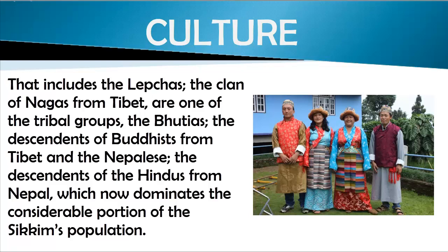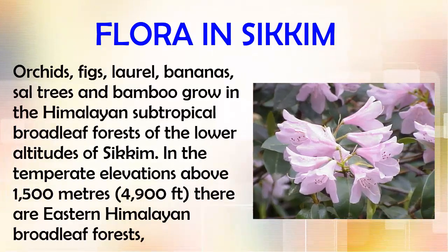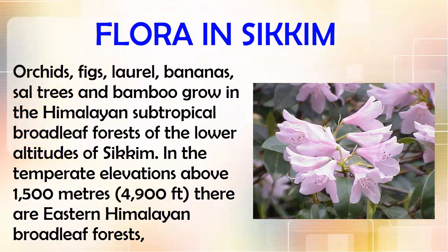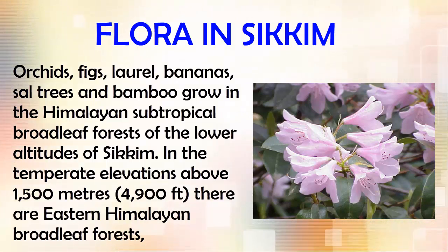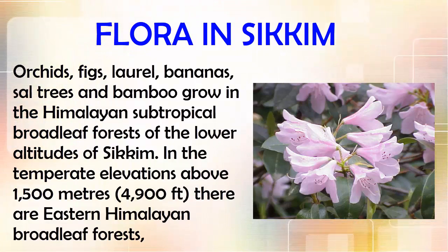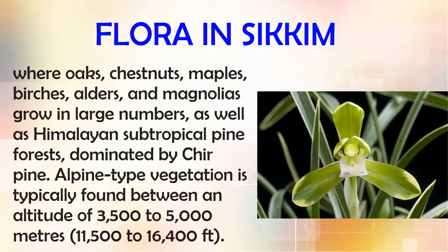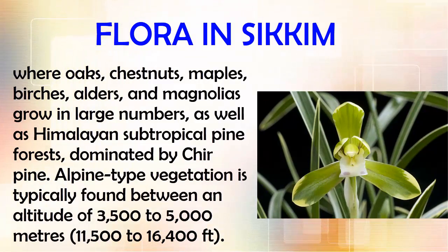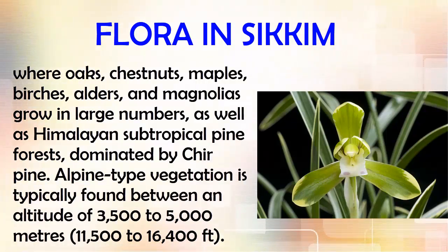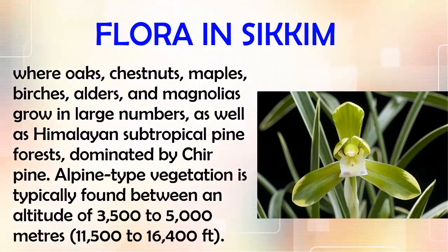Flora in Sikkim: Orchids, figs, laurel, bananas, sal trees, and bamboo grow in the Himalayan subtropical broad-leaf forests of the lower altitudes of Sikkim. In the temperate elevations above 1,500 meters, there are eastern Himalayan broad-leaf forests, where oaks, chestnuts, maples, birches, alders, and magnolias grow in large numbers, as well as Himalayan subtropical pine forests dominated by chir pine. Alpine-type vegetation is typically found between an altitude of 3,500 to 5,000 meters.